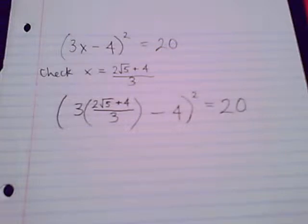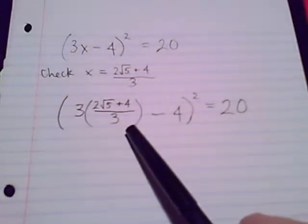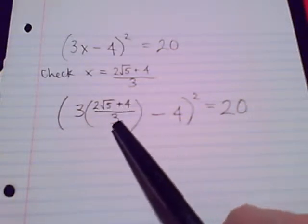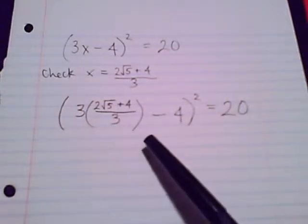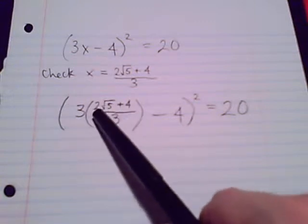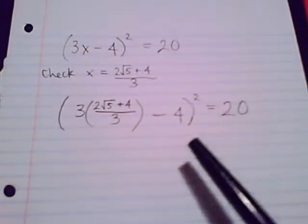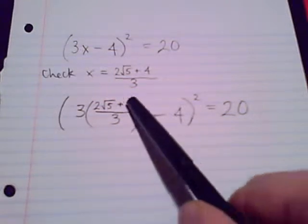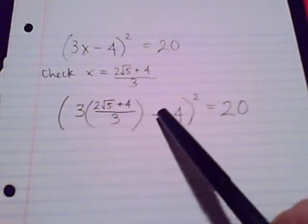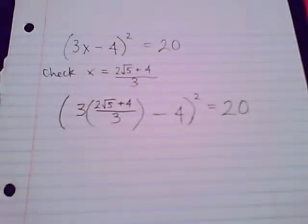Order of operations has me looking inside this set of parentheses, but I know there's really nothing more I can do. I don't have like terms. I can't do any simplifying. So I'm out of this set of parentheses and looking at the larger set of parentheses, where I have 3 times this quantity, and then I'll want to subtract 4.